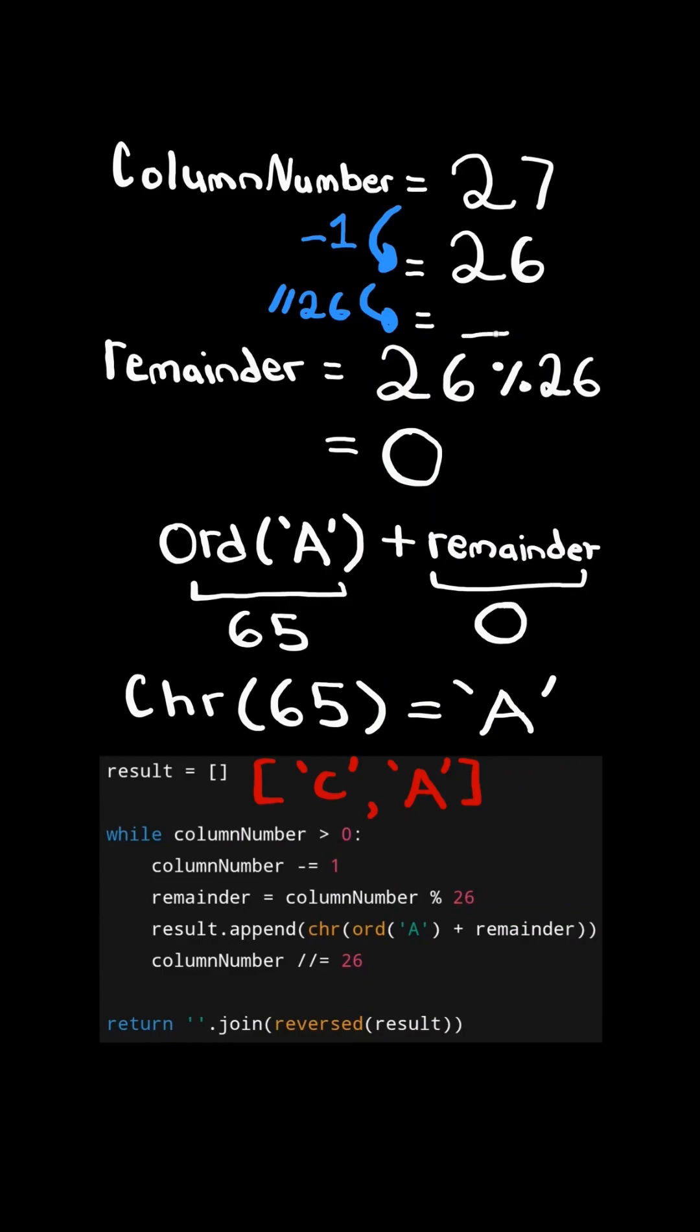And finally, we integer division the column number by 26. And we continue the algorithm while the column number is still greater than zero.